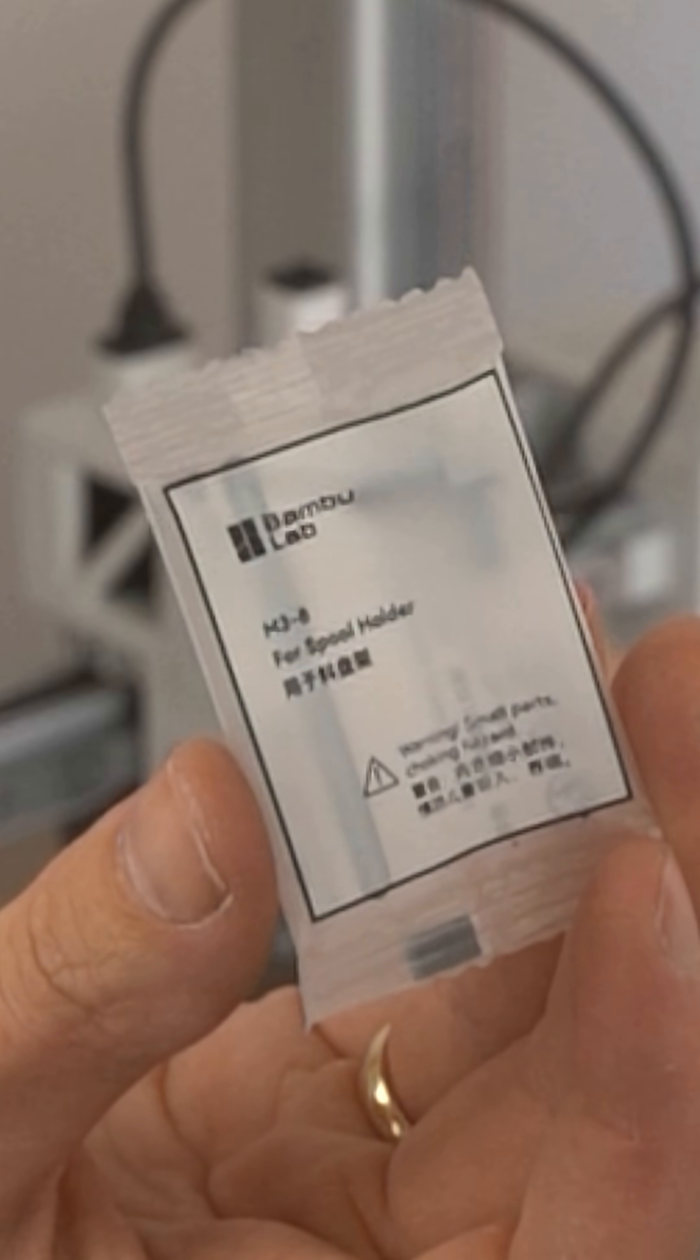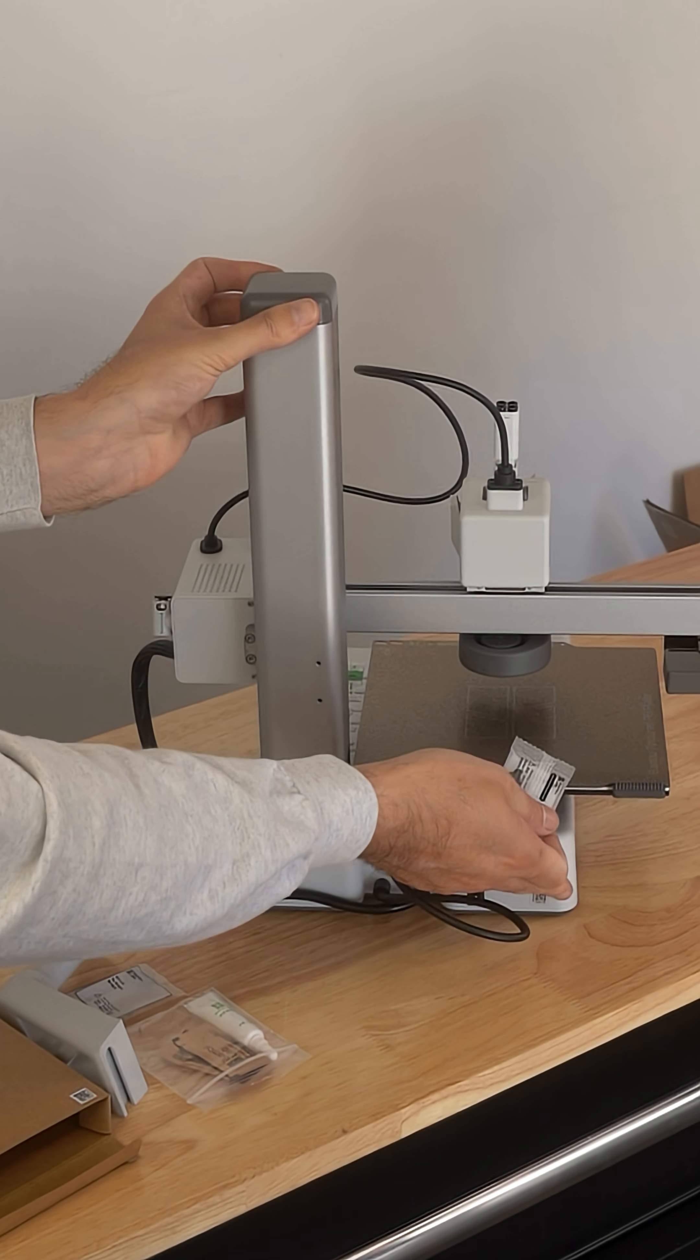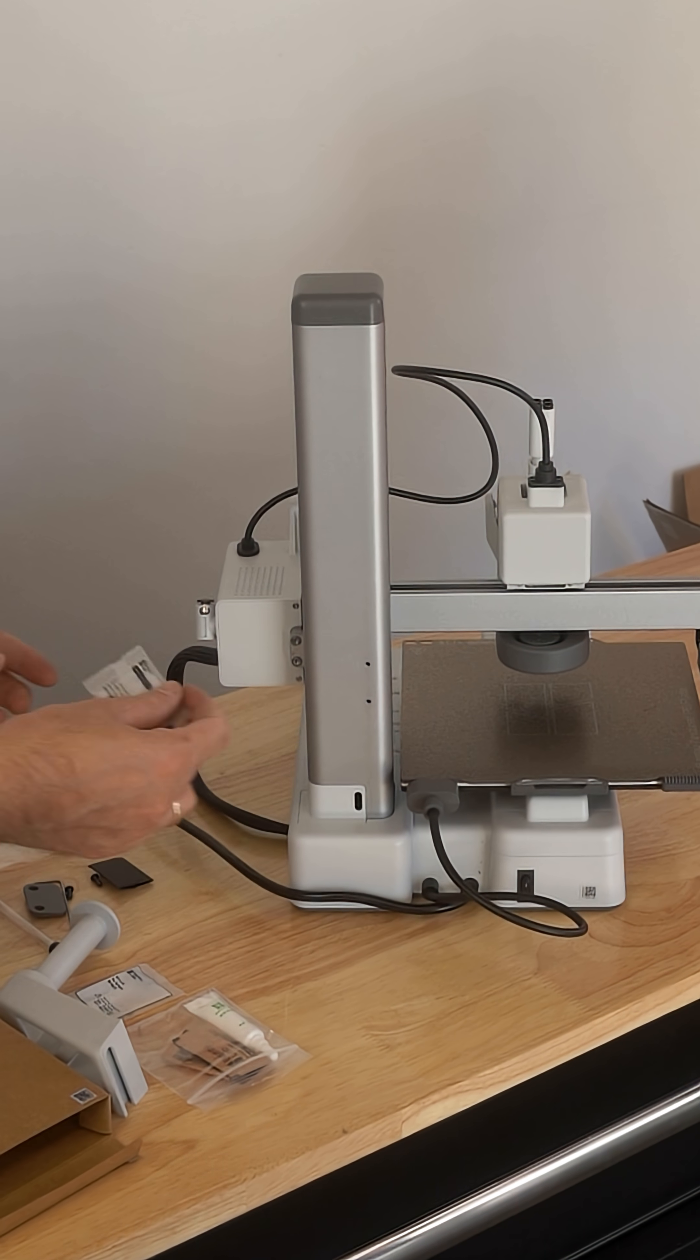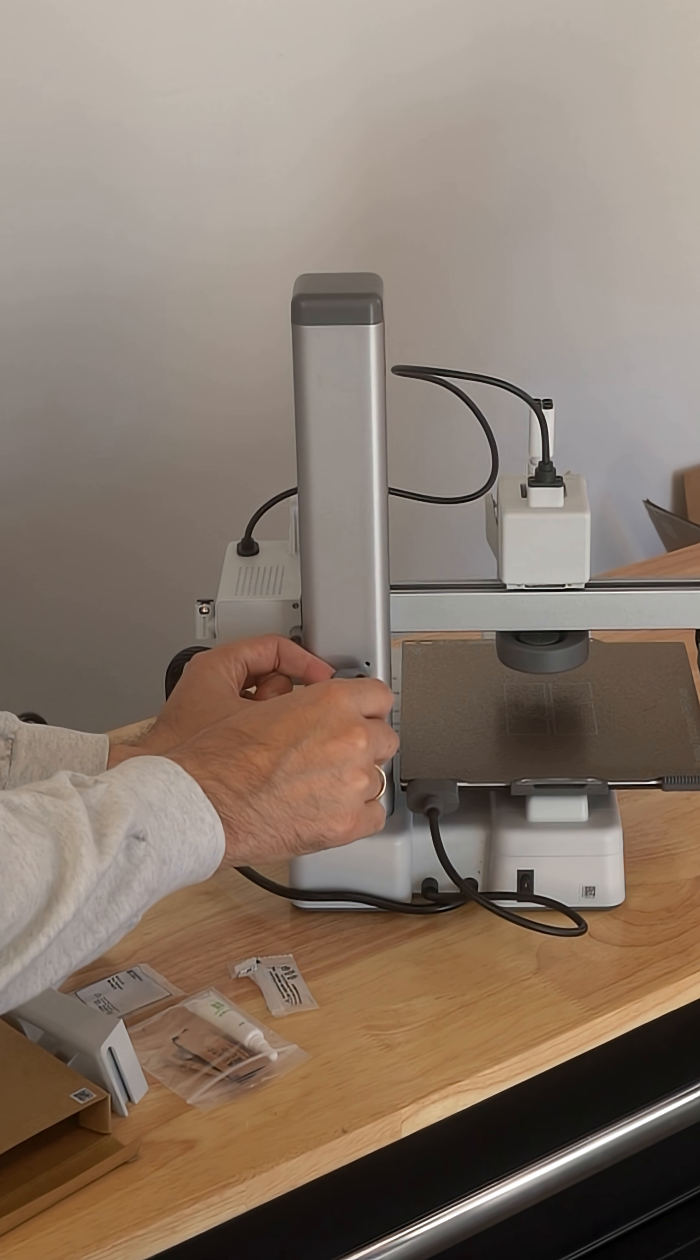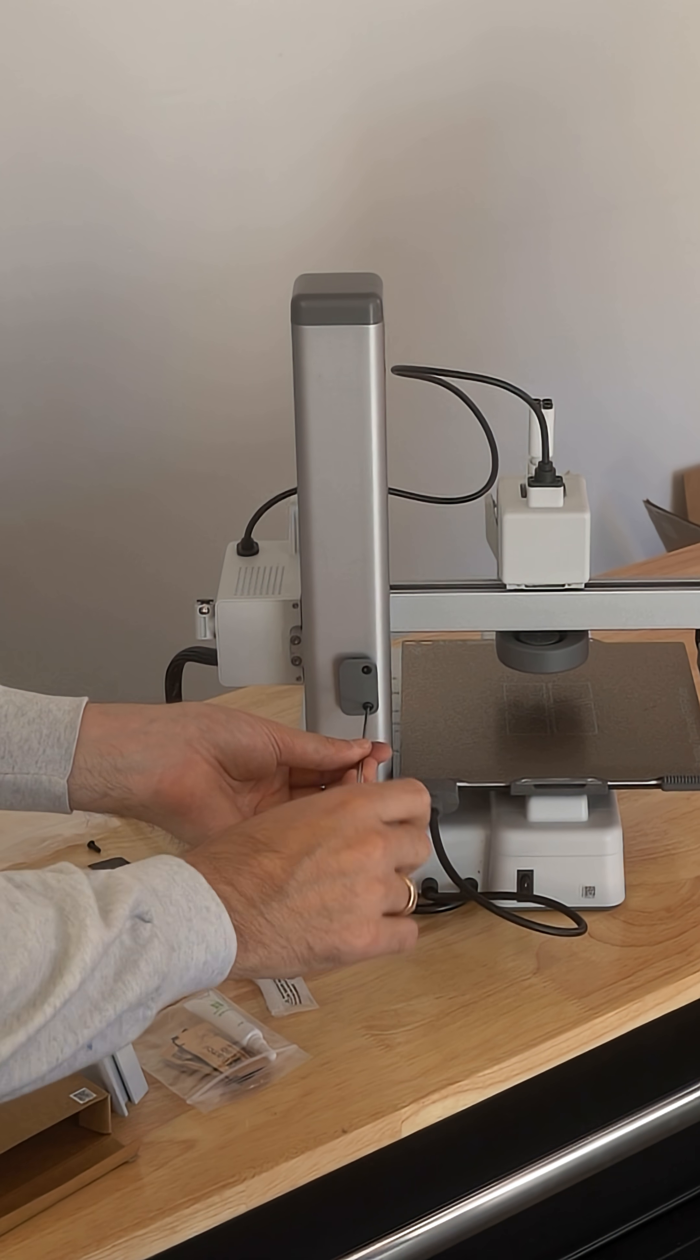Now, we're almost done here. We'll need two more bolts here for the filament spool holder. The filament is the material that the 3D printer prints. You'll find two holes in the back and align the part like so, and then tighten it with the two bolts.